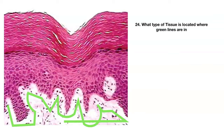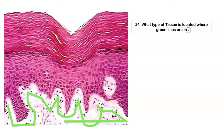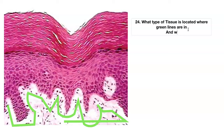Number twenty-four. What type of tissue is located where the green line is scribbled? What is this tissue down here called — just the general tissue name — and why is that tissue important to our epithelial tissue?